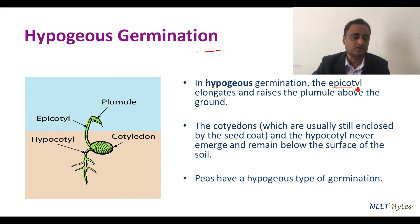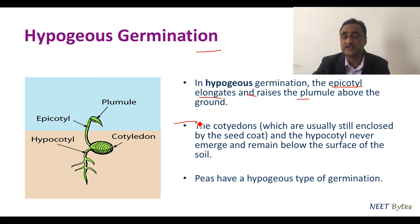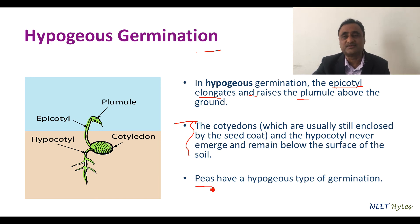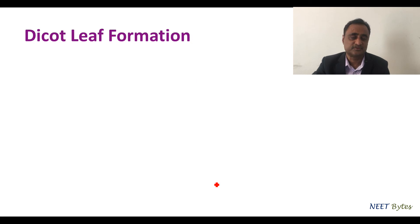In hypogeal germination, the epicotyl elongates — not the hypocotyl as in the previous case — and raises the plumule above the ground. That is why the cotyledons still remain buried inside the earth. Pea is a typical example of hypogeal germination.